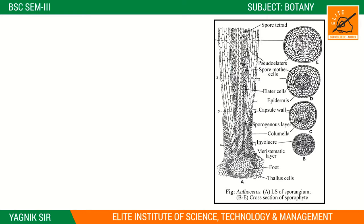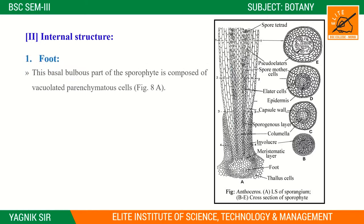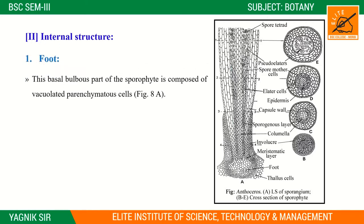Now we go on to the internal structure. Looking at the report, the first part is the foot. The foot is a basal part of the sporophyte and is composed of vacuolated parenchymatous cells.